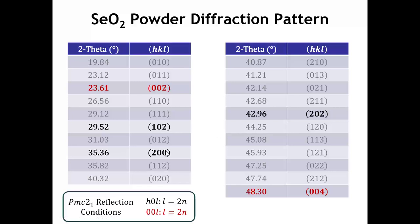I might also note that 002 and 004 do fall under the H0L condition as well, since they also have K equal to zero, but they don't violate either condition. So we can simply see that in the powder diffraction pattern of SeO₂, the reflection conditions are met.